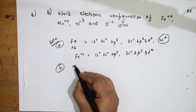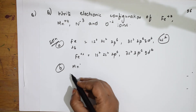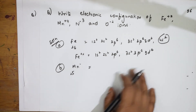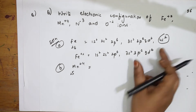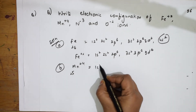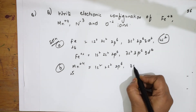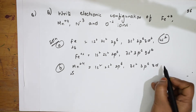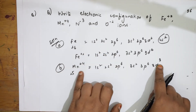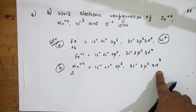Next, for Mn⁴⁺ (Z=25): write the Mn configuration first, then remove 4 electrons from the outermost shell. After removing 4 electrons, the configuration becomes 1s², 2s², 2p⁶, 3s², 3p⁶, 3d³. The 4s² and 2 electrons from 3d⁶ are removed to give 3d³.